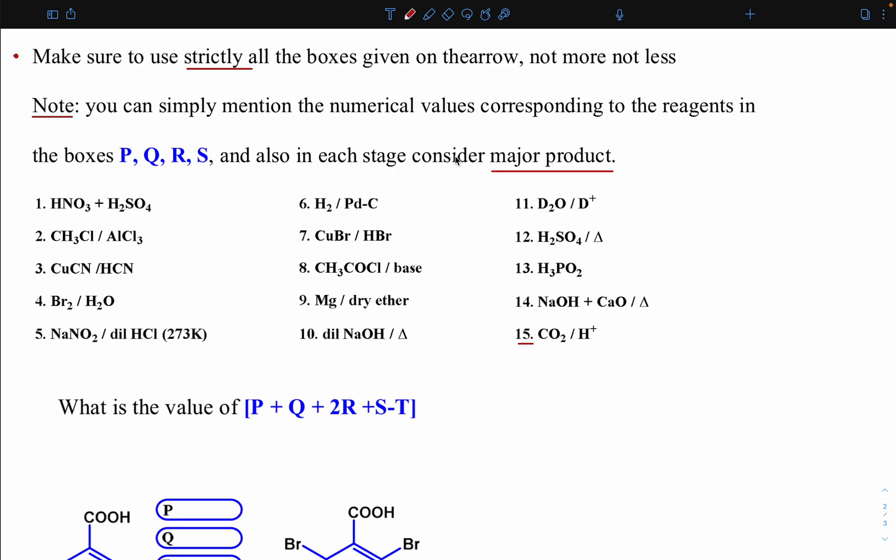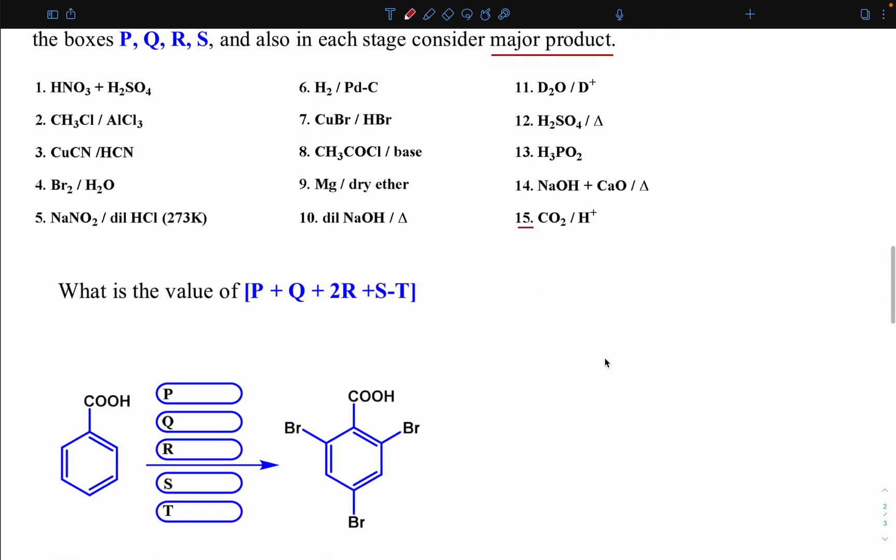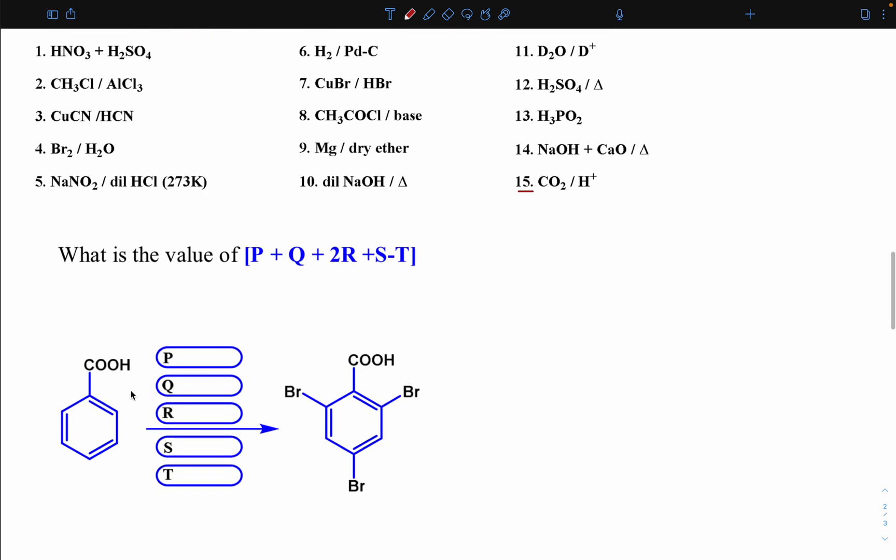In each stage consider major product. When you are going to select any reagent from the pool, you should take care that the product should be major. In that way you have to convert this reactant into this particular product by filling these boxes in sequence, and every sequence should give major product. Finally you should get this final answer: 2,4,6-tribromobenzoic acid.